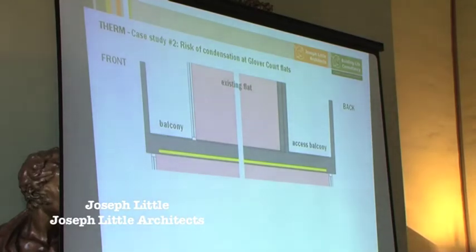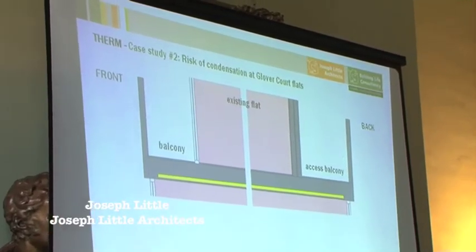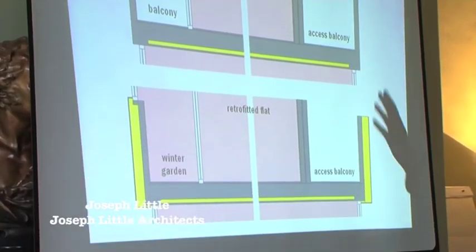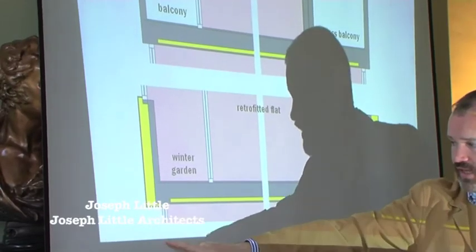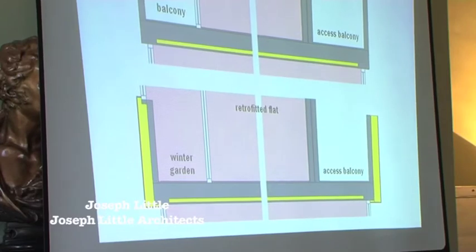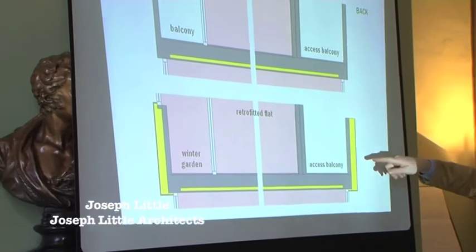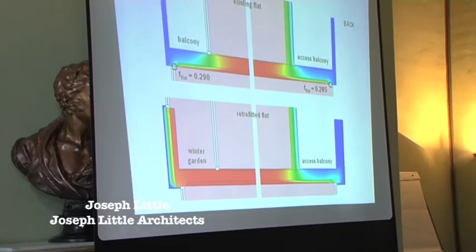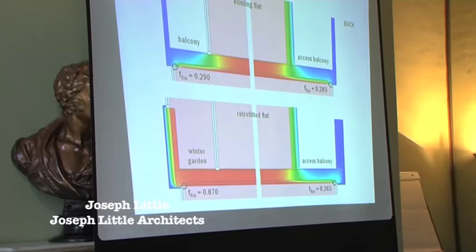That's a simple section through the existing building — almost zero insulation. On the good side — the front of the building — we're proposing creating the winter garden and the insulation line, a fairly continuous insulation line as a retrofit. Looking at the temperature factors: the existing building has 0.29 on one side and 0.285 on the other side. If we're looking for 0.75 to avoid condensation risk, we're clearly in condensation territory — there will be condensation every winter, clearly running condensation. The maintenance regime for the city council will be higher, the comfort level for the occupant will be lower. When we upgrade, we're up at 0.87, which is a good deal above 0.75 — very healthy.